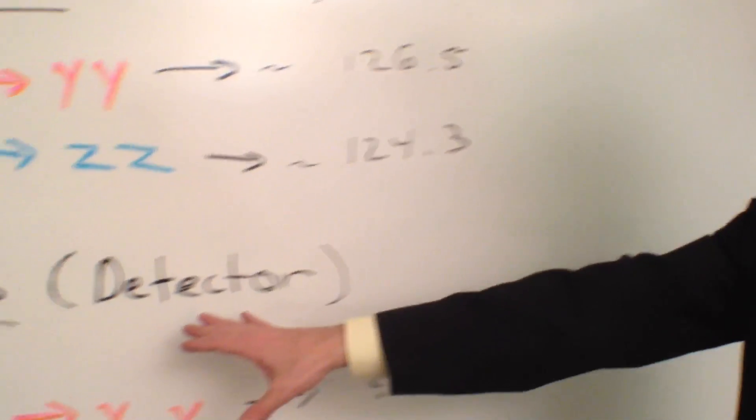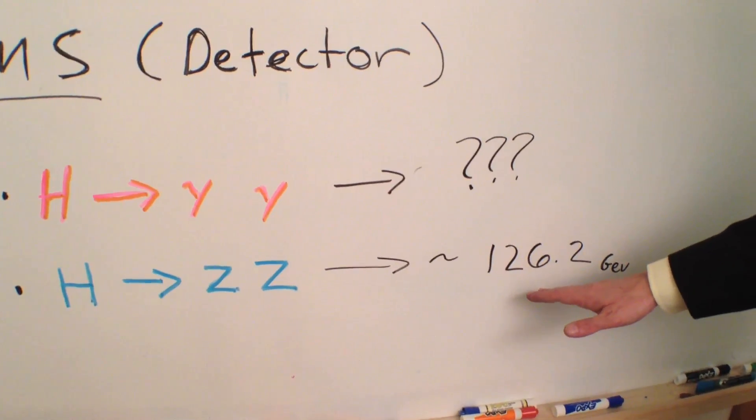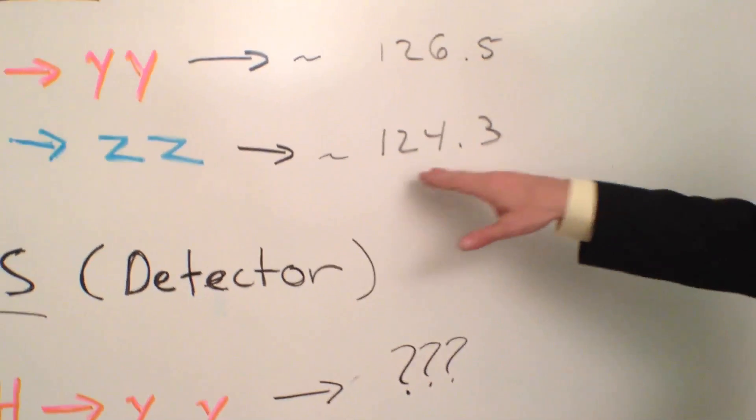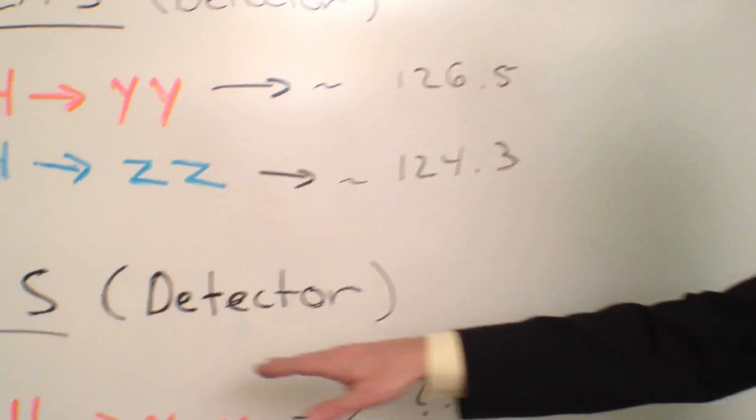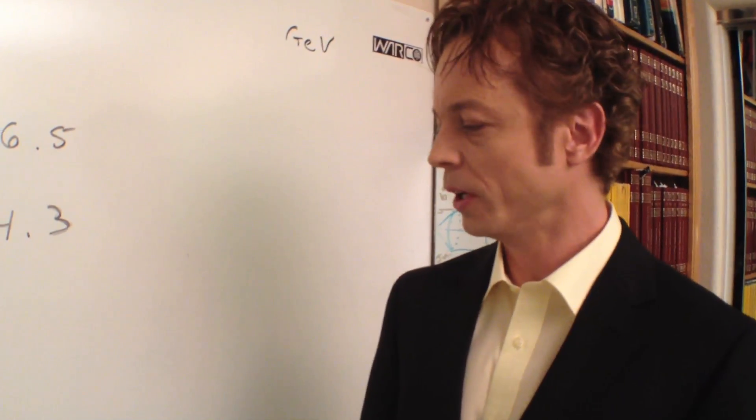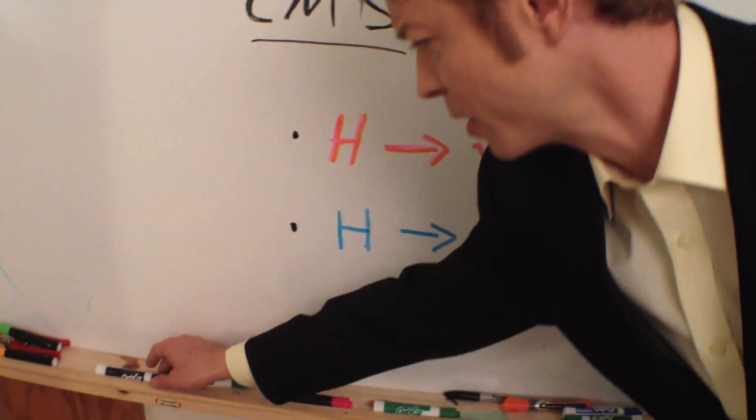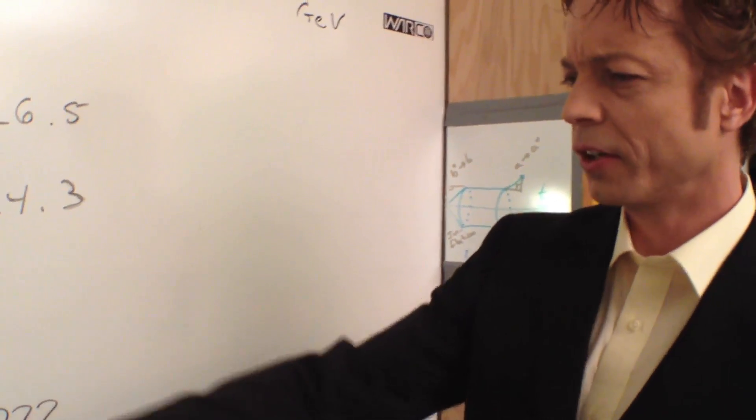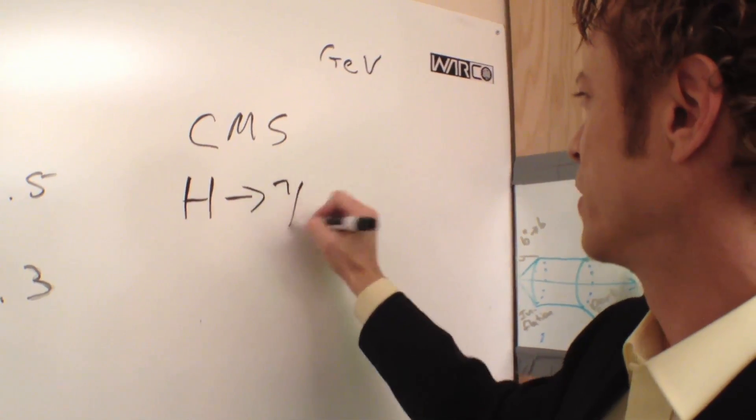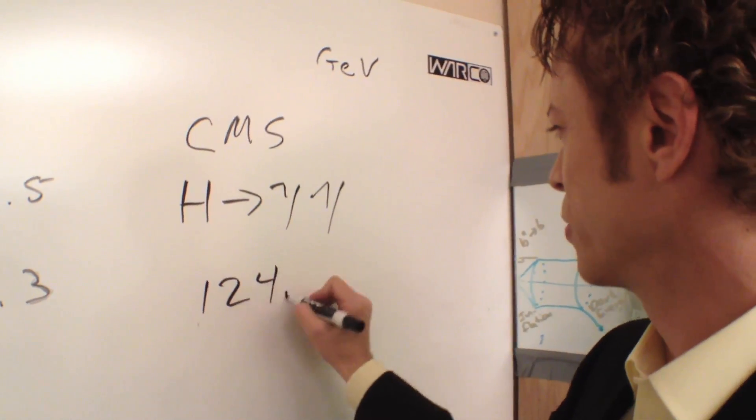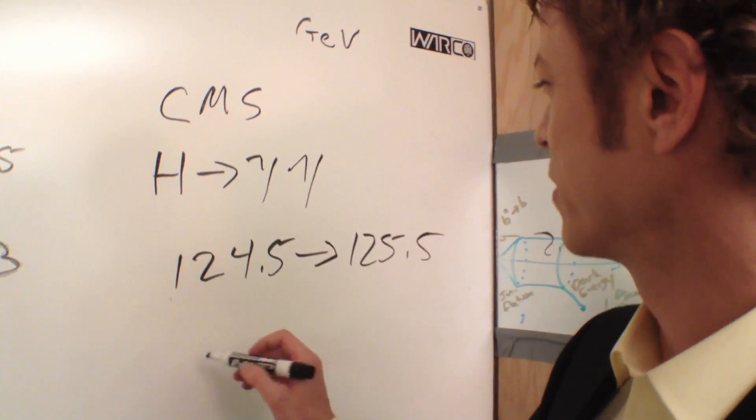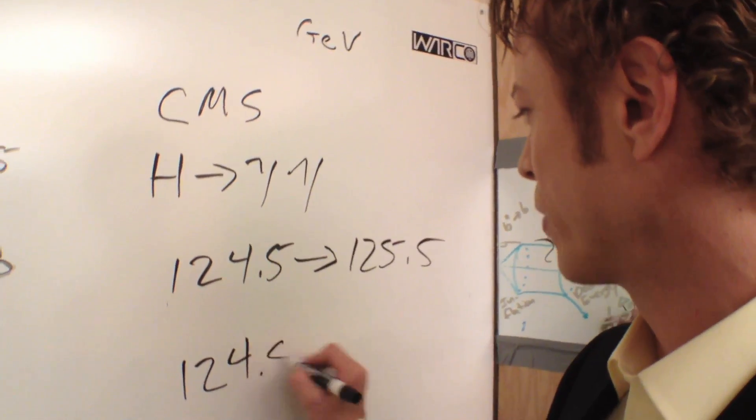Last time, with the CMS detector, the Higgs to ZZ channel was roughly 126.2 GeV, but here, we had a mass around 124.3 GeV. Oddly enough, for some reason, CMS has withheld releasing their data on the Higgs to gamma-gamma channel. So what I wanted to do was, before they released that data, take the opportunity to go ahead and make a prediction of what I think they're going to say the mass of the Higgs to gamma-gamma channel is in their data set. I'm going to predict that the CMS Higgs to gamma-gamma channel has a mass range between 124.5 to 125.5 GeV, somewhere around 124.5 and just put it right here.